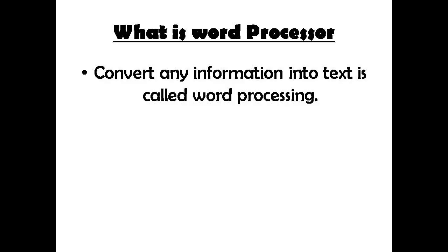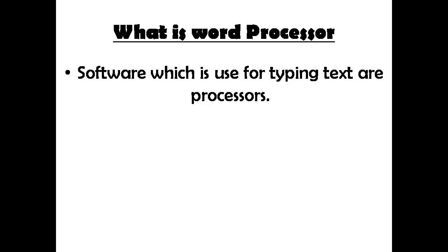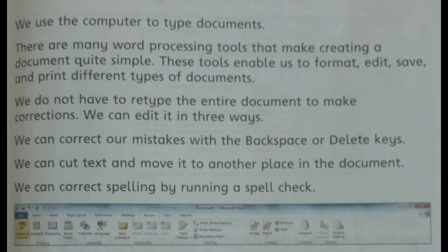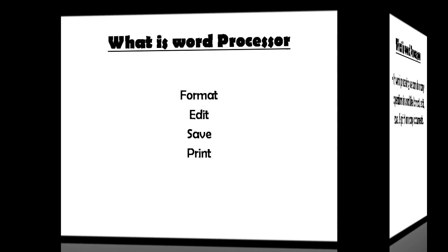In simple words, conversion of any information into text is called word processing, and the software used to do that is basically known as a word processor. Going back to the book: there are many word processing tools that make creating documents quite simple. These tools enable us to format, edit, save, and print different types of documents.